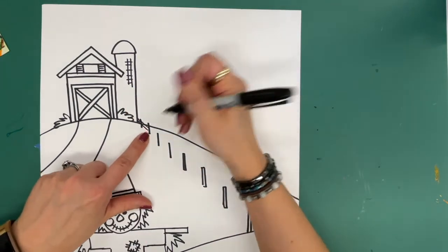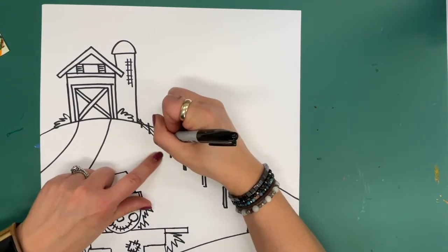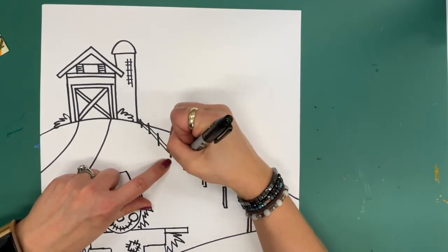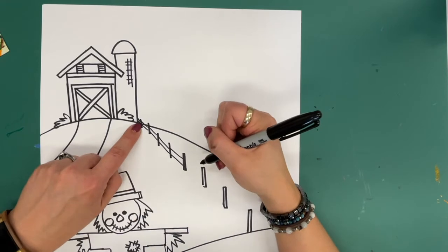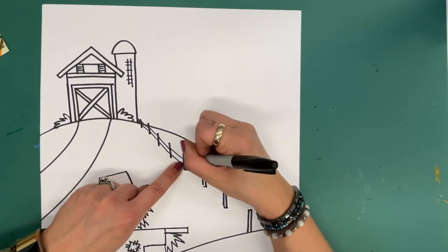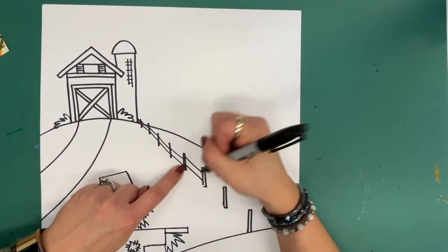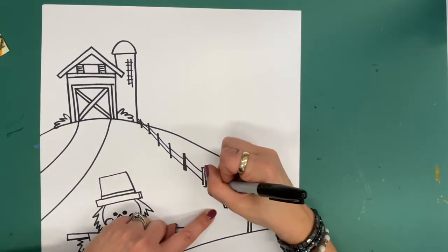And I'm going to put in the rails between. So two lines connecting them. Boom, boom, boom, boom, boom, boom. And notice how close together they are when they're in the distance. And as they are getting closer to the viewer, they're being spread out more.